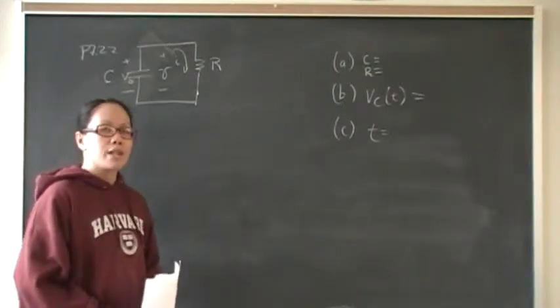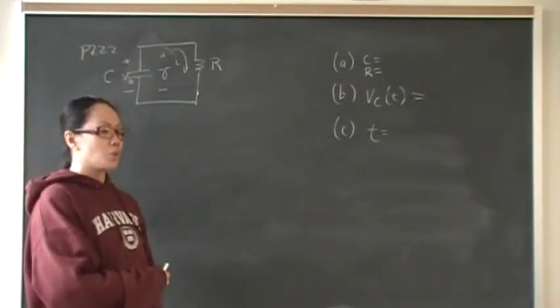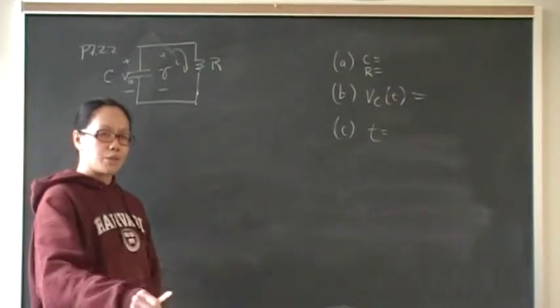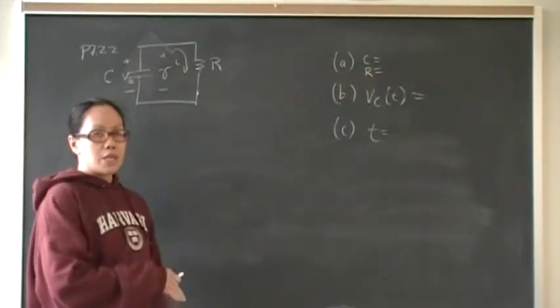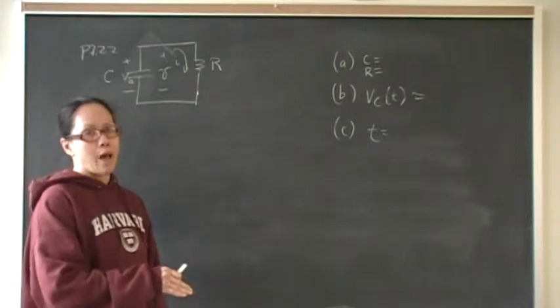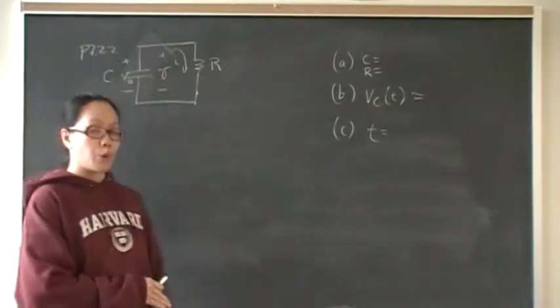Once you have the initial voltage source, it's just the initial voltage source times a decaying response. So that's going to be E to the negative T over tau. That is Part B.